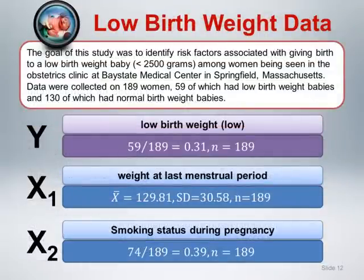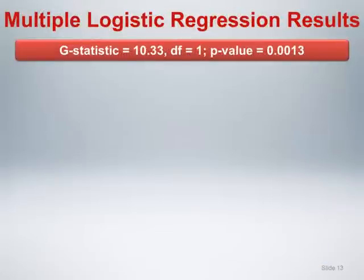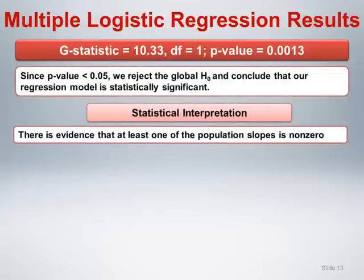Returning to the low birth weight data, let's consider a model with low birth weight as the outcome and two independent variables: weight at last menstrual period and smoking status during pregnancy. Here are the multiple logistic regression results. The global null hypothesis, simultaneously testing that both slope coefficients are zero, is tested by a G statistic. Here the G statistic is 10.33 with one degree of freedom, yielding a p-value equal to 0.0013, indicating a statistically significant result. We conclude that there is evidence that at least one of the population slope parameters is non-zero. Next, we proceed with individual hypothesis tests for each slope and summarize our results.